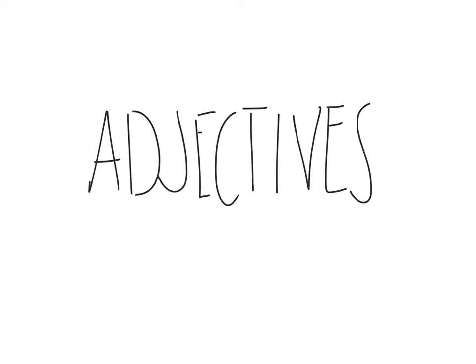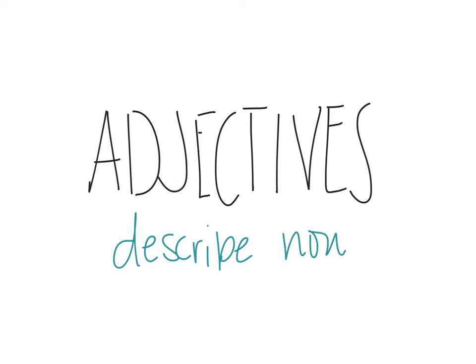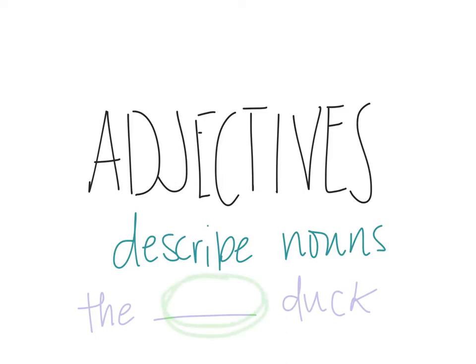Hopefully most of you have covered that, but for the benefit of those of you that haven't, you need to know this. Adjectives describe nouns — they are the words that are descriptive. I like to put it this way: if a word can fit in this blank — 'the blank duck' — it is an adjective. So I could say the yellow duck, the fluffy duck, the big duck. Whatever fits in there, that's an adjective. Adjectives describe nouns.